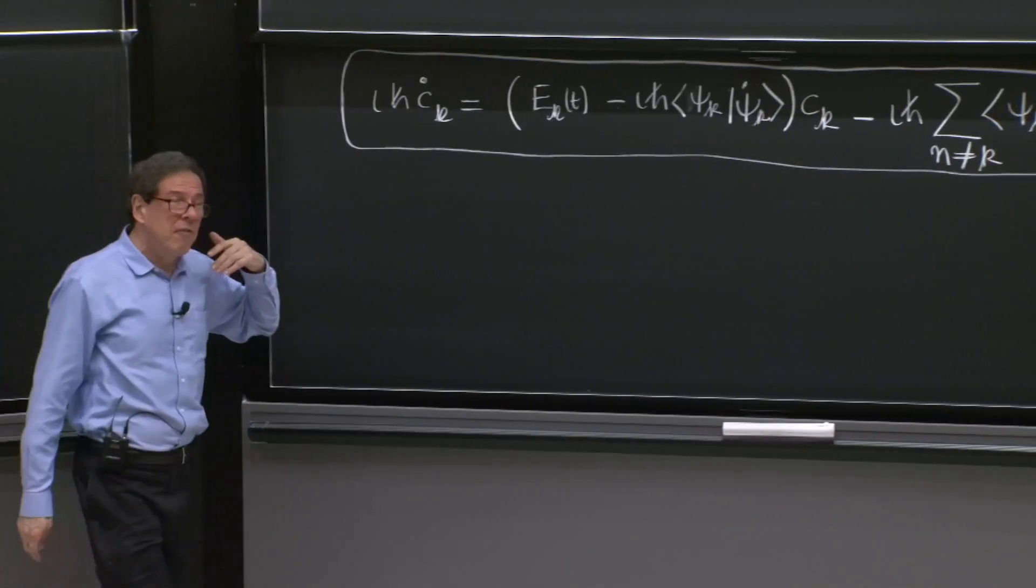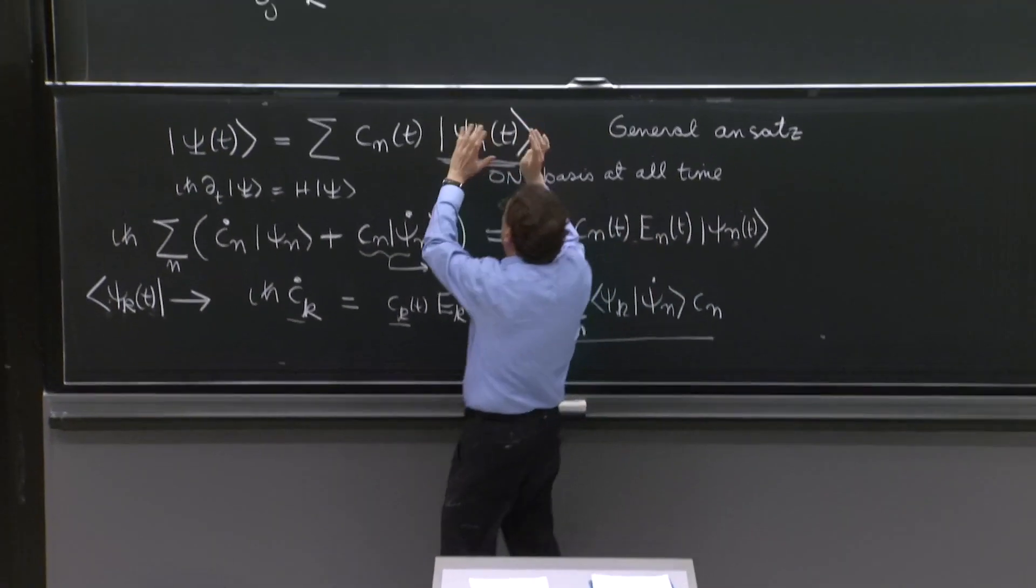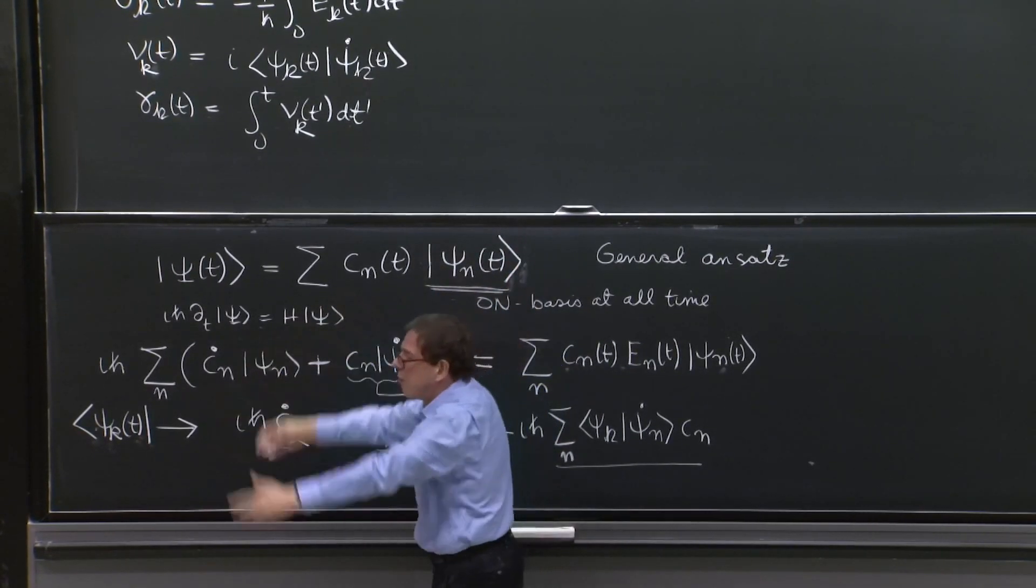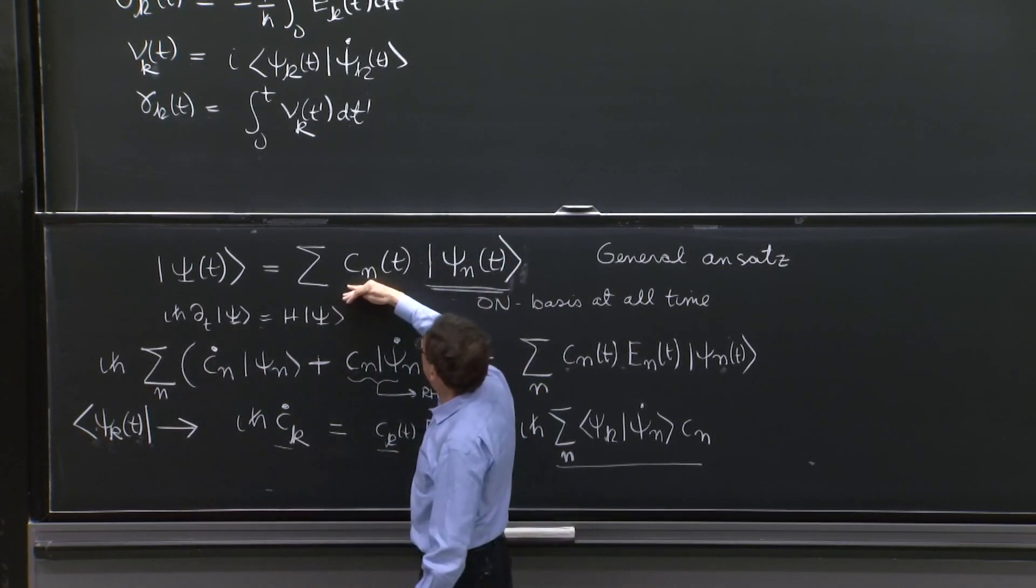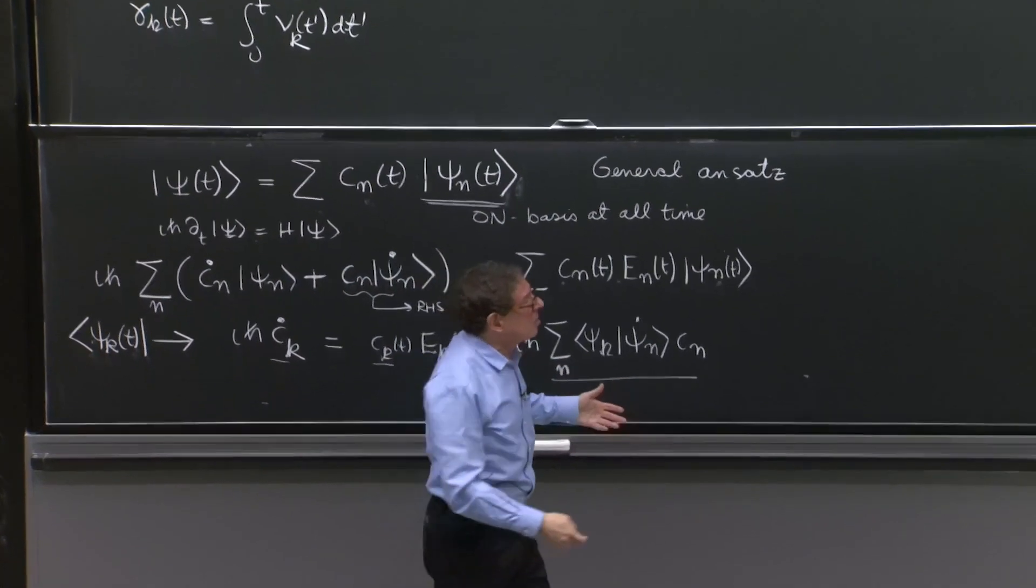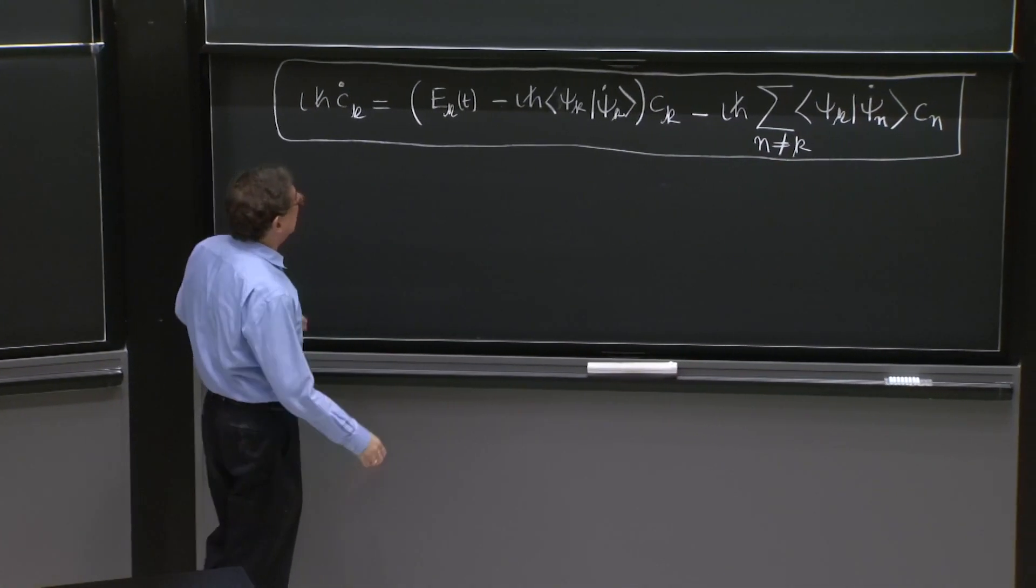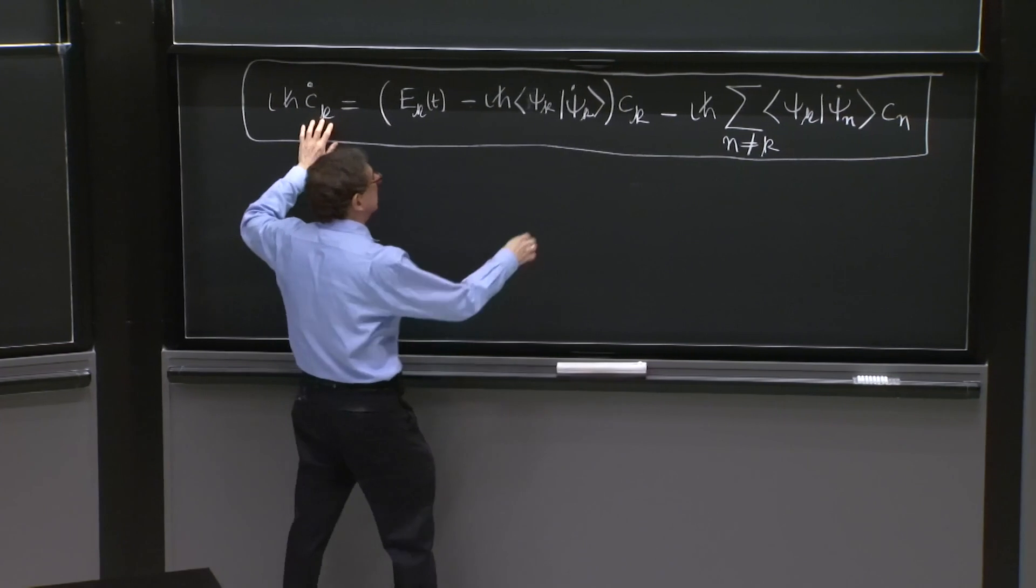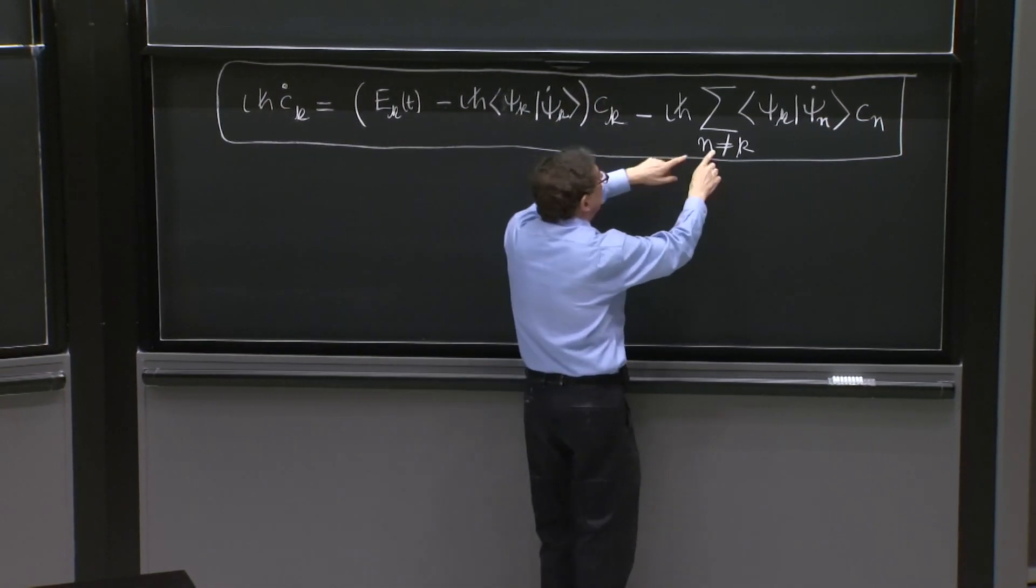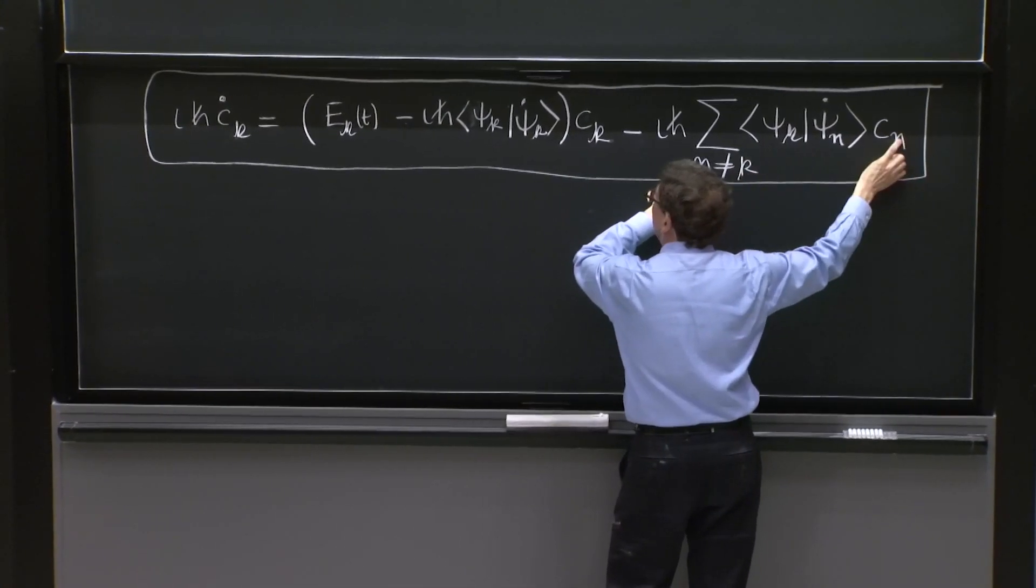What did we do before? We used just one of them. We took one instantaneous energy eigenstate, then we tried to make a solution by multiplying by one thing. But then it doesn't work, because when you have just one coefficient, say k with some fixed k, you have this equation, but then you couple to all other coefficients where n is different from k.